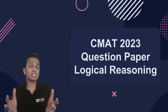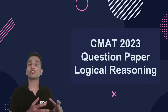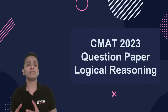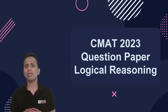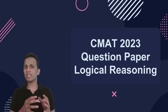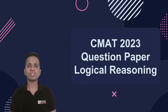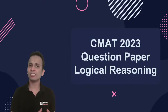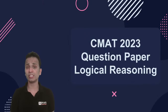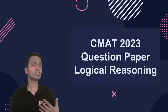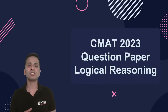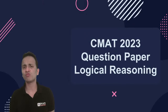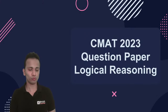Out of these 20 questions, they are a mix of questions from analytical reasoning and verbal reasoning. In this session, I have selected only the questions which are from analytical reasoning. In each slot of CMAT 2023, we have seen 13 out of 20 questions from analytical reasoning and seven questions were based on verbal reasoning, which would include topics like statements, assumptions, strengthening the argument, weakening the argument, syllogisms and so on.